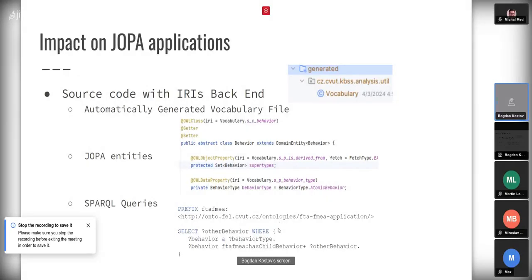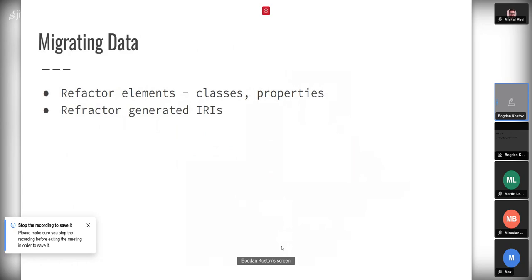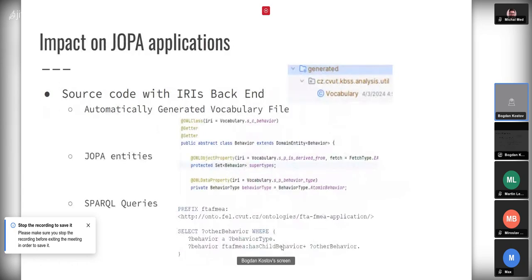For example, if we have changed the 's child behavior' property to not use camel case but to use dashes, we can search for that, which would find our queries, or we can just find queries and search within them for IRIs to refactor.